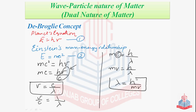This is the de Broglie equation for wave-particle duality of matter. In this equation, wavelength is mathematically related to the momentum of the electron — at the same time expressing a dual nature, as wavelength represents waves and momentum represents particles. This is the de Broglie equation for wave-particle duality.